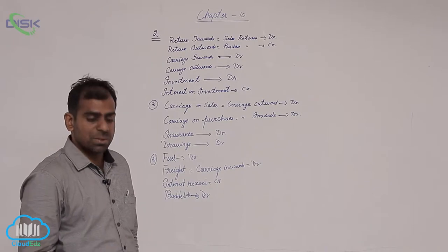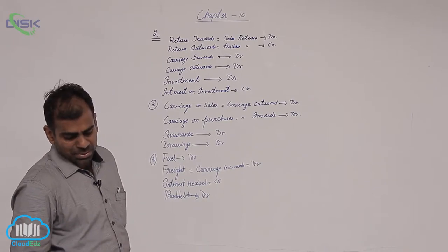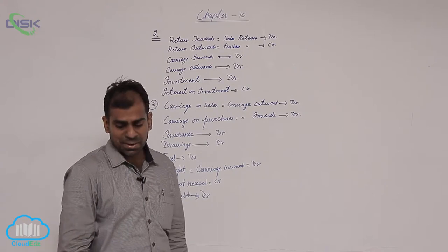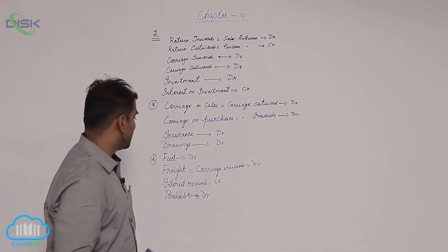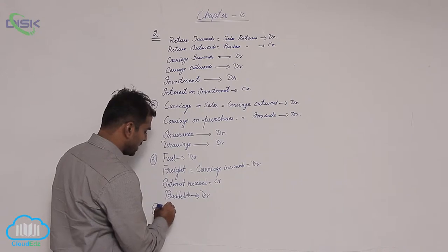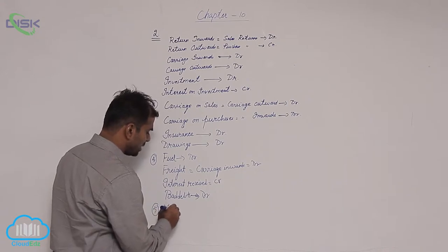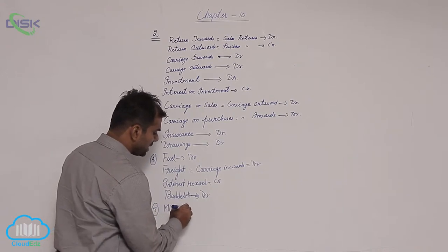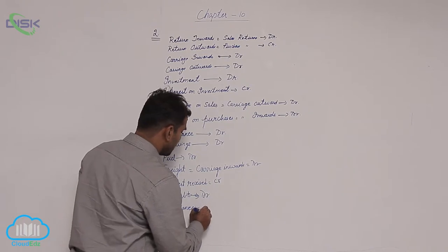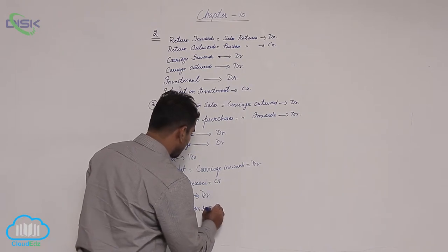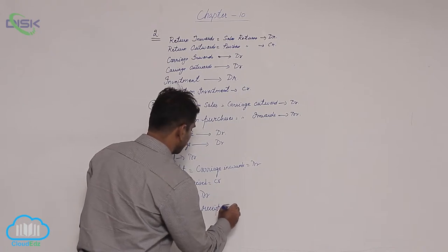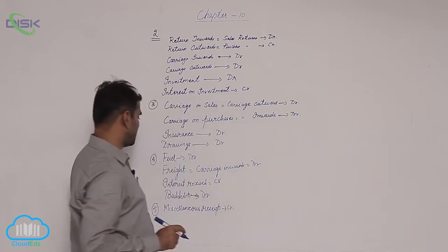Moving on to the fifth problem, you have one item slightly different from the rest: miscellaneous receipts. Miscellaneous receipts will be taken as income, and incomes show credit balances, so it is taken as credit.